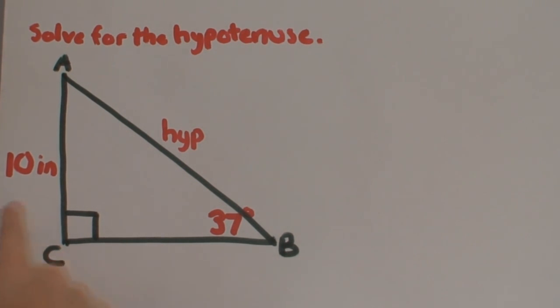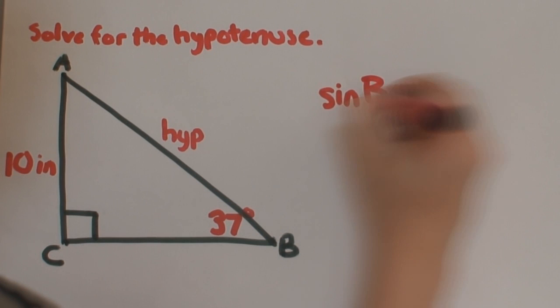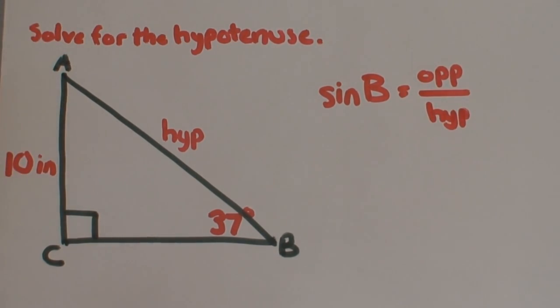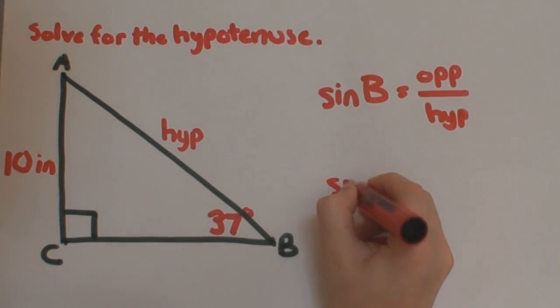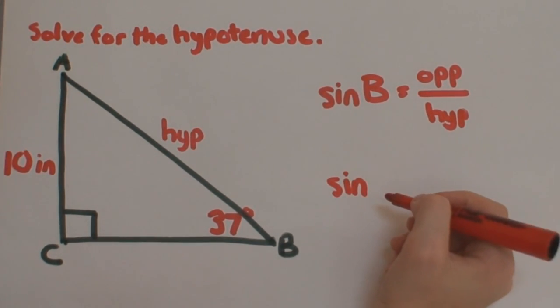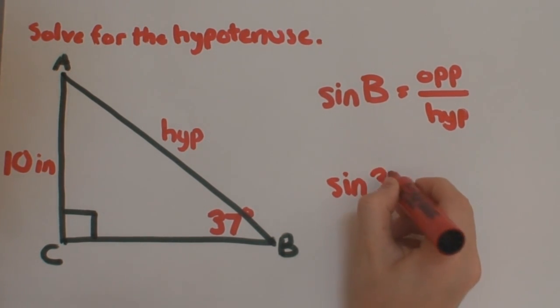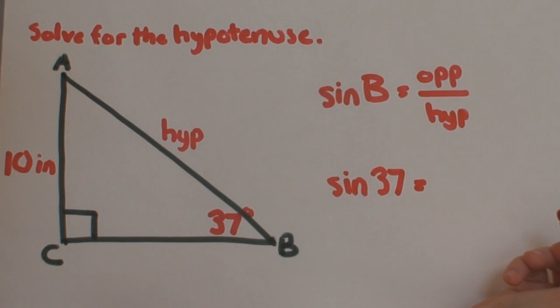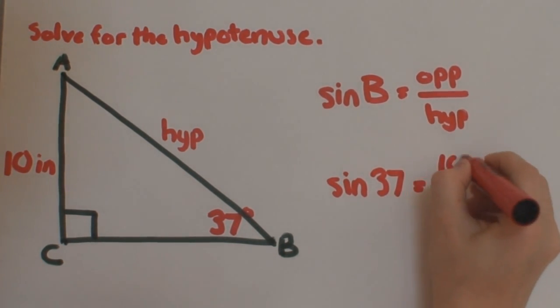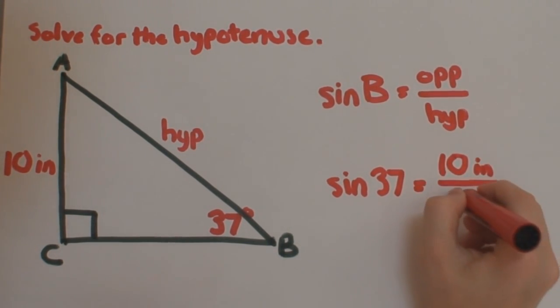So, let's fill in what we already know. We know the angle measure is 37 degrees. And we know the opposite side is 10 inches long. We don't know the hypotenuse.